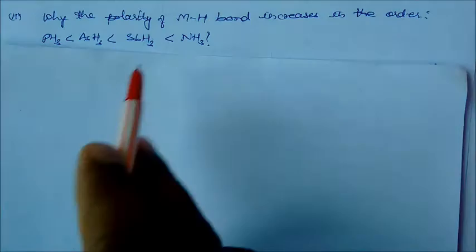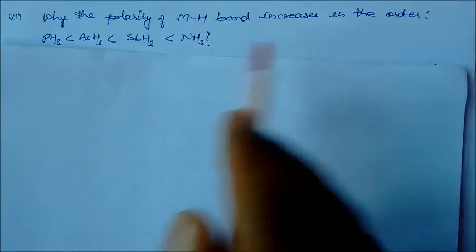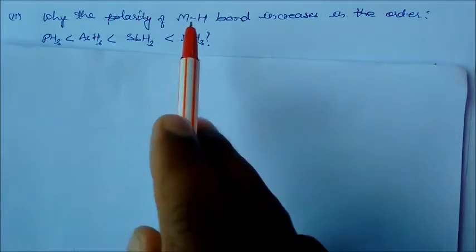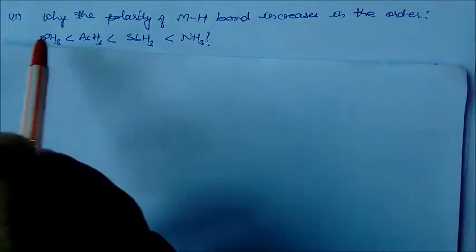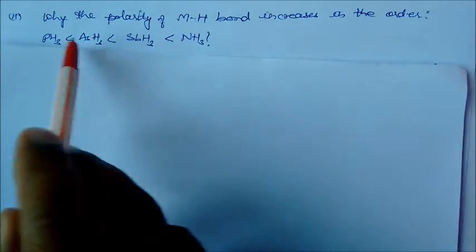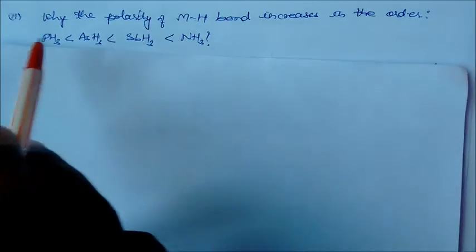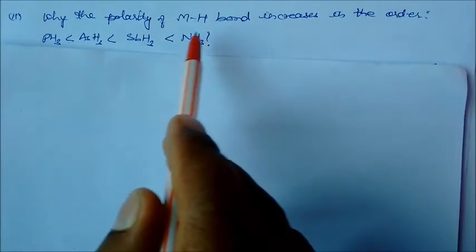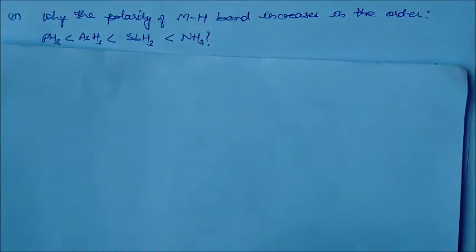Why does the polarity of M-H bond increase in this order down the group? So this is non-metal, like nitrogen, phosphorus. So we increase it down the group in this order. Like ammonia has the highest M-H bond polarity, while this element has the lowest order.